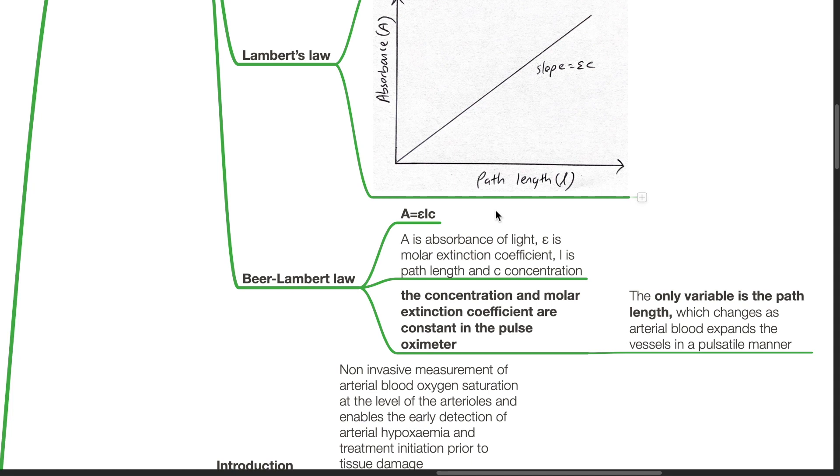The concentration and molar extinction coefficient are constant in the pulse oximeter, and the only variable is the path length, which changes as arterial blood expands the vessel in a pulsatile manner.